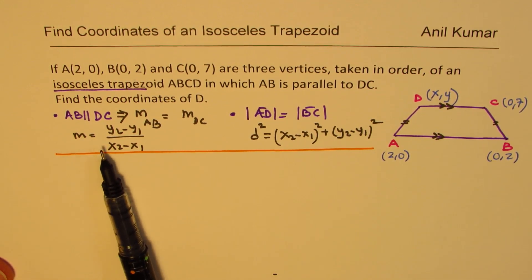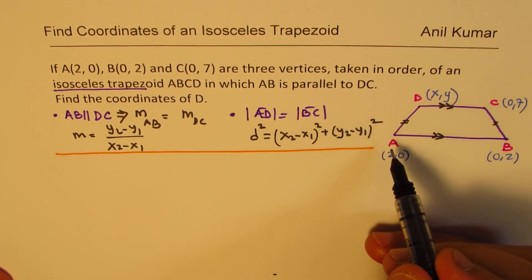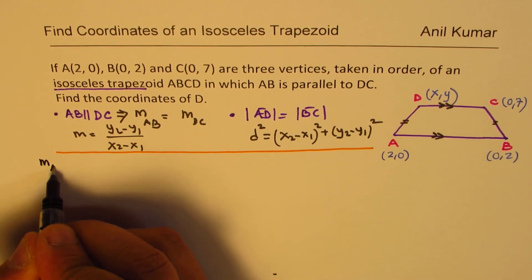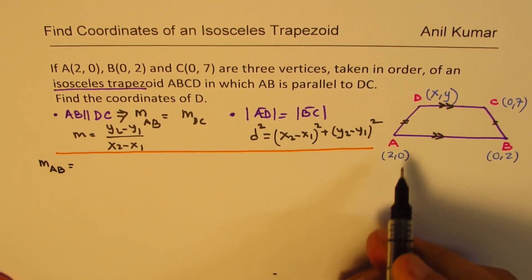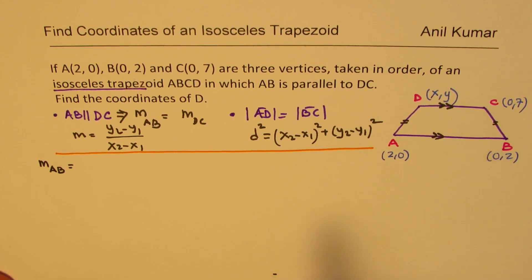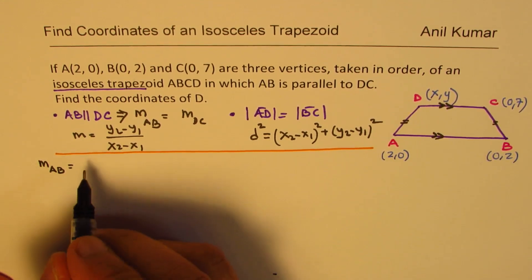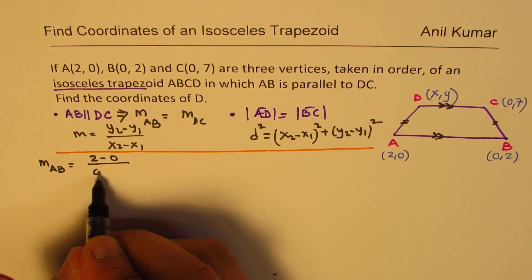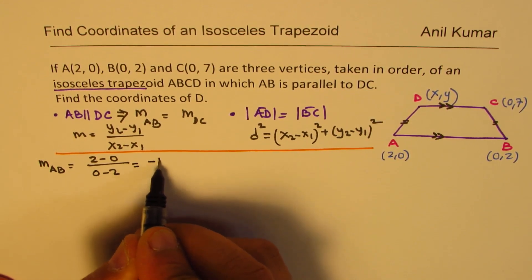Now let's begin with the slope. So slope of AB, let's write down m_AB. Now these values are given to us, right? So we can find the slope A is 2 minus 0 over 0 minus 2. So that is minus 1.